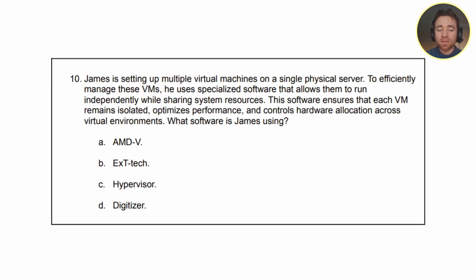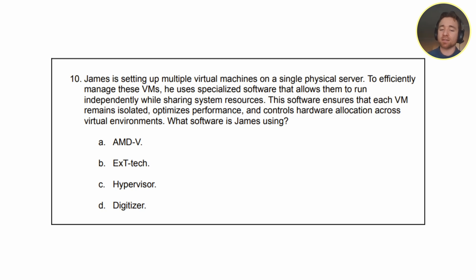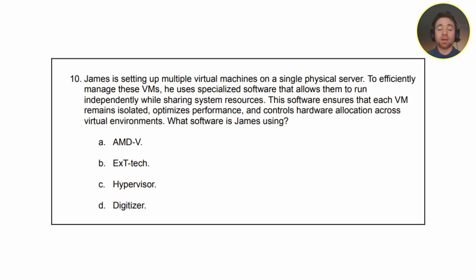The question from exam objective four reads: James is setting up multiple virtual machines on a single physical server. To efficiently manage these VMs, he uses specialized software that allows them to run independently while sharing system resources. This software ensures that each VM remains isolated, optimizes performance, and controls hardware allocation across virtual environments. What software is James using? A, AMD-V. B, EXT Tech. C, Hypervisor. Or D, Digitizer. You're going to have to know what a few of these things are to successfully answer this question.